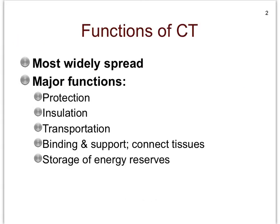Remember that there are four tissue categories in the body. We've already studied the epithelial tissues. We're about to study the connective tissues. Then there are the muscle tissues — skeletal muscle tissue, cardiac muscle tissue, and smooth muscle tissue, which you only find in the walls of hollow organs — and finally there is nervous tissue. We'll discuss the muscle tissues when we get to the muscular system, and we'll study nervous tissue when we get to the nervous system.